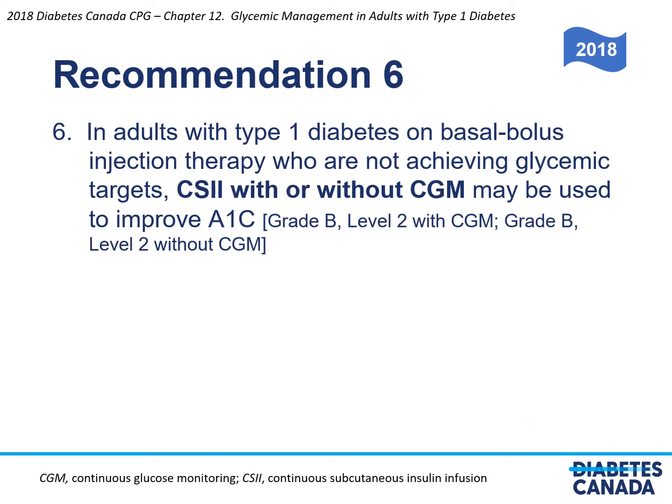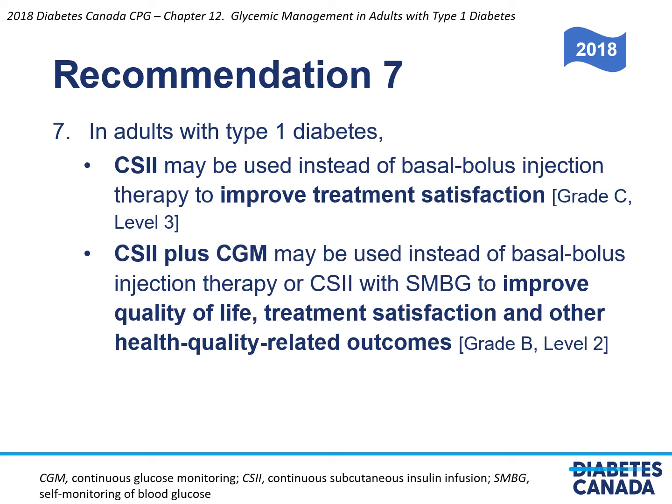Recommendation 6: In adults with type 1 diabetes on basal bolus injection therapy who are not achieving glycemic targets, CSII with or without CGM may be used to improve A1C. Recommendation 7: In adults with type 1 diabetes, insulin pump therapy may be used instead of basal bolus injection therapy to improve treatment satisfaction. Insulin pump therapy plus CGM may be used instead of basal bolus injection therapy or pump therapy with SMBG to improve quality of life, treatment satisfaction, and other health-related outcomes.